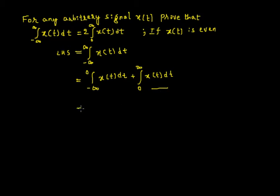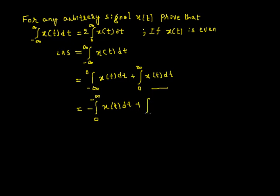The first part, if I compare it, is the same but the limits are not. So I will interchange the limits from 0 to minus infinity. If I want to do that, I have to include a negative sign. So that gives minus integration from 0 to minus infinity of x(t) dt. The second term I will retain as it is: integration from 0 to infinity of x(t) dt.